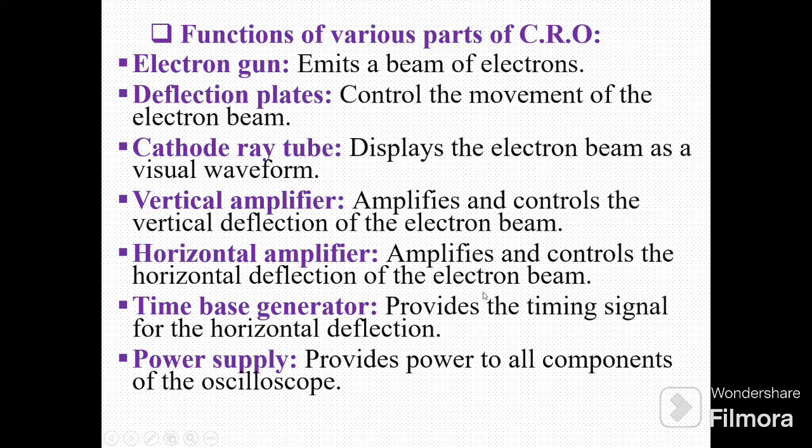Now, functions of various parts of CRO. Electron gun emits a beam of electrons. Deflection plates control the movement of the electron beam. The cathode ray tube displays the electron beam as a visual waveform. Vertical amplifier amplifies and controls vertical deflection of the electron beam. Horizontal amplifier amplifies and controls horizontal deflection of the electron beam. Time-based generator provides the timing signal for horizontal deflection. Power supply provides power to all components of the oscilloscope.